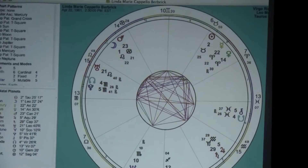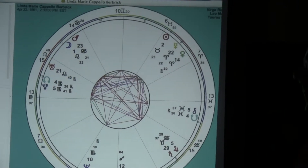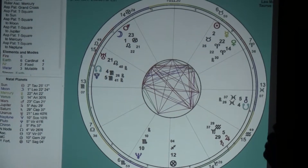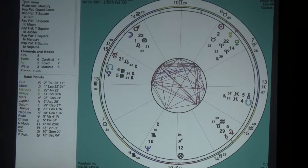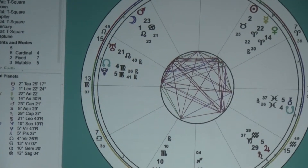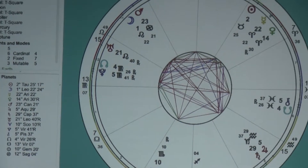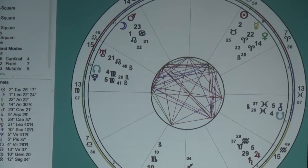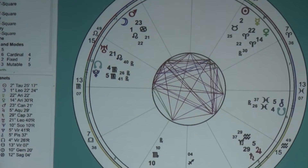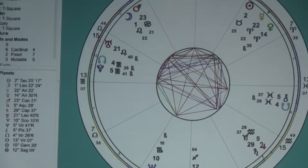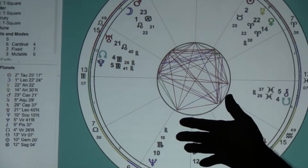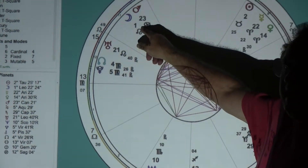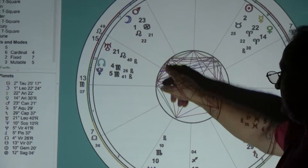Mars-Saturn opposition is the worst physical aspect quite frankly you can have in a chart — especially when they're afflicted in cardinal signs, because cardinality is very physical. Anyone with afflictions in cardinal signs is subject to physical injury or physical problems. Saturn — the word 'chronos' — so let's interpret that affliction as chronic. Chronic pain from Mars. She suffered that in her life — I know it by that aspect.